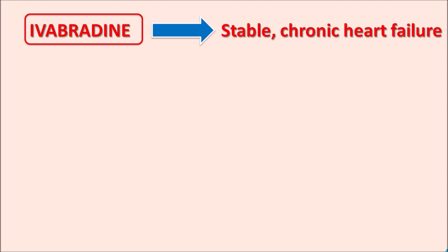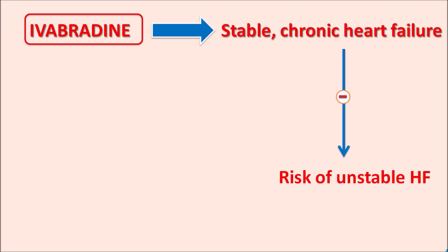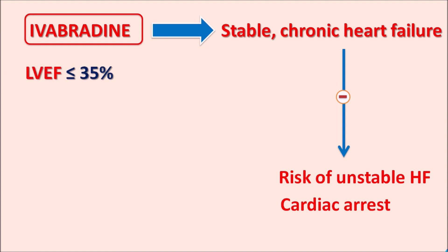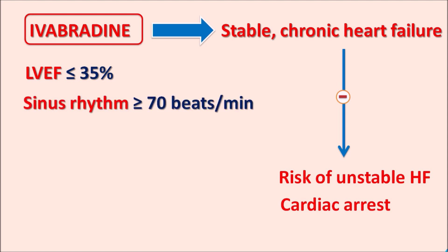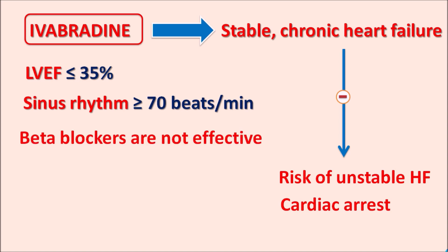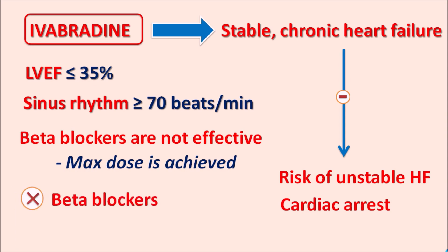Ivabradine reduces the risk of unstable heart failure as well as sudden cardiac arrest. Particularly this drug is useful in patients with LVEF ≤35%, patients with sinus rhythm ≥70 beats per minute, and in patients where beta blockers are ineffective. If a patient is given beta blockers at maximum dose but heart rate is not controlled, Ivabradine can be given. It can also be given in patients contraindicated with beta blockers.